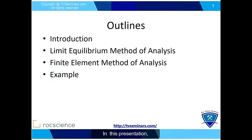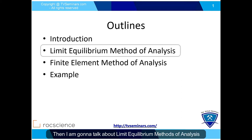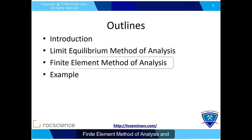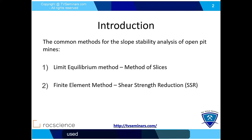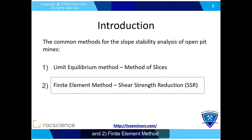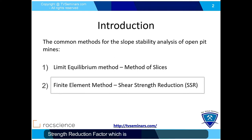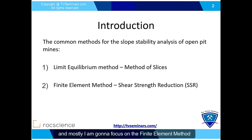In this presentation, I am going to start with an introduction, then talk about the limit equilibrium method of analysis, finite element method of analysis, and one example at the end. There are two common methods used for slope stability analysis of open-pit mines: the limit equilibrium method, which uses the method of slices to calculate factor of safety, and the finite element method, which uses the shear strength reduction method to find the strength reduction factor, which is similar to the factor of safety. I am going to focus mostly on the finite element method, which is a more rigorous method to calculate factor of safety.